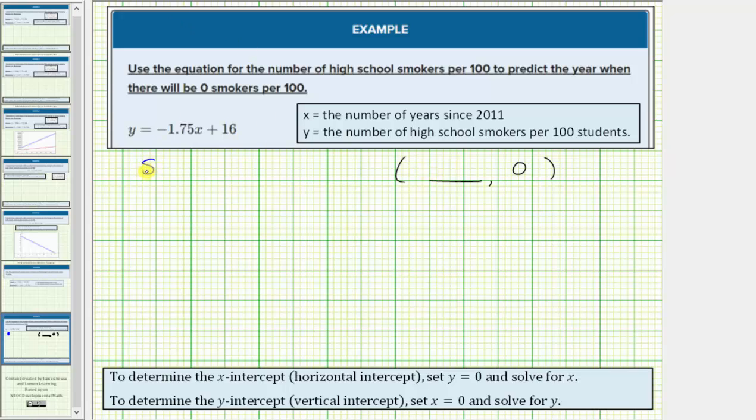So using the equation, we'll set y equal to zero and solve for x. So we'd have zero equals negative 1.75x plus 16.